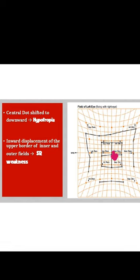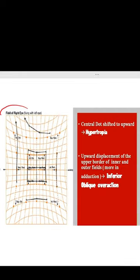There is an inward displacement of the upper border of the inner fields and also the outer fields, that means there is a weakness in the action of the superior rectus. In the right eye,